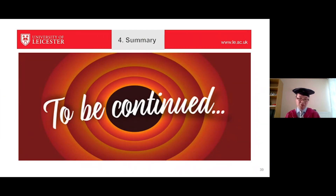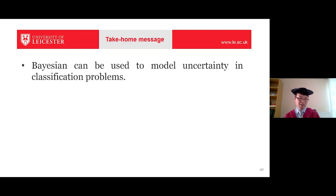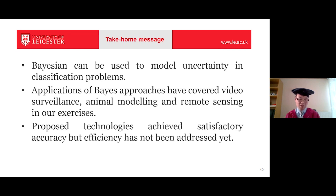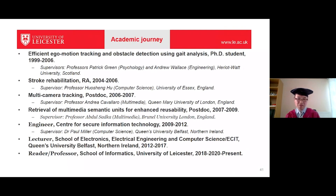I'm sure you've received quite a lot of information today. The summary and take-home message is: we have investigated Bayesian approaches, which can be used to model uncertainty in classification problems. In this talk we covered applications including video surveillance, animal modeling, and remote sensing. Our approach achieved very good results and satisfactory accuracy. However, we haven't yet fully addressed efficiency strategies.